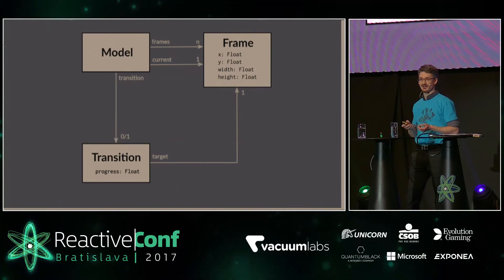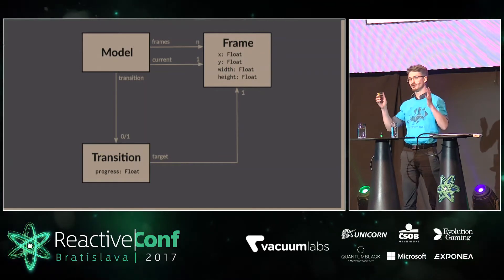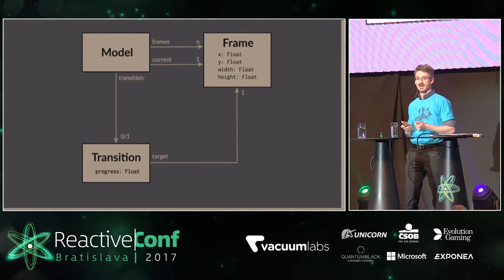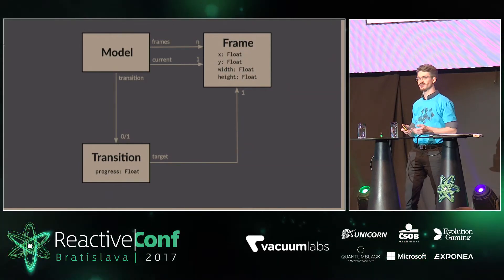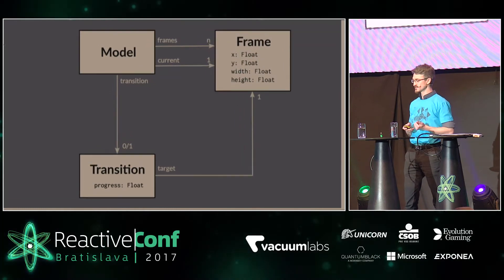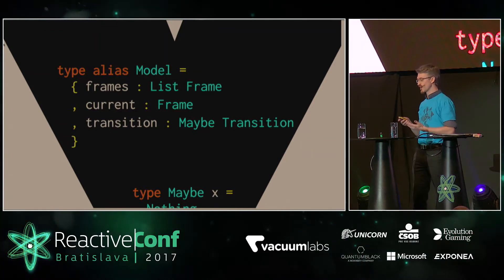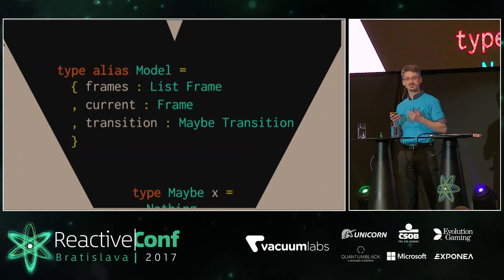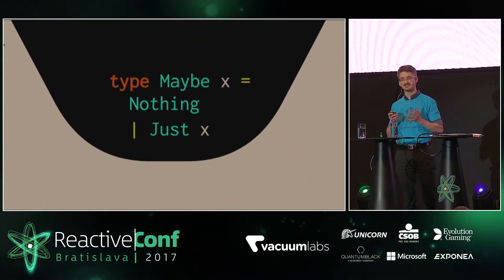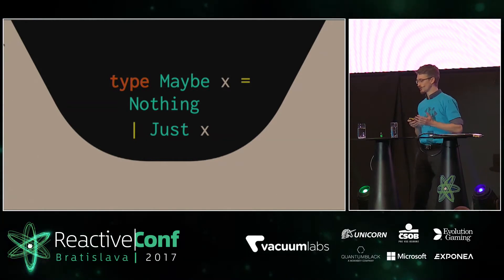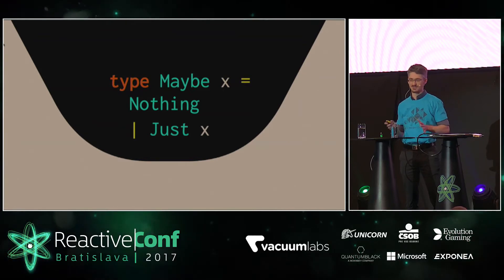First we define our model. We need a list of frames and there's always one current frame — the frame we are currently viewing. The second thing we need is the transition state, so whenever we are moving from one frame to the other we have a transition. This is a 0-1 relationship. In Elm code we use a record type: we have frames, the list of frames, the current frame, and the transition state of type Maybe Transition. This lets us explicitly model a 0-1 relationship in Elm, so any null pointer exception is eliminated at runtime — actually any runtime exception is eliminated with Elm.